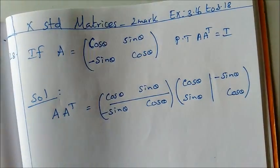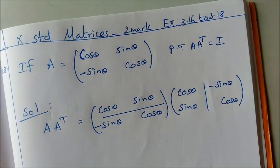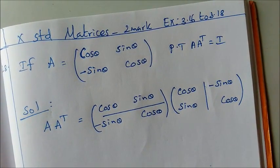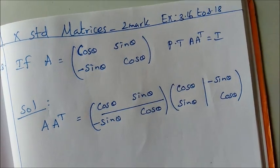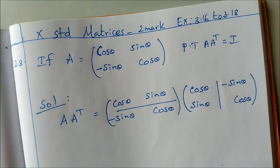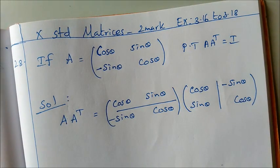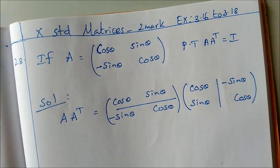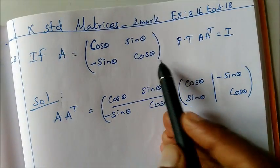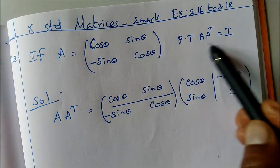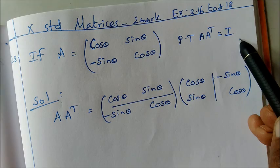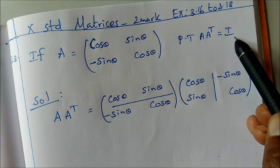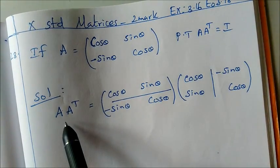This is 10th standard matrices, 2 mark, between exercises 3.16 to 3.19, 28th sum. If capital A equals cosθ sinθ, then minus sinθ cosθ, prove that AA transpose equals I, where I is the identity matrix.